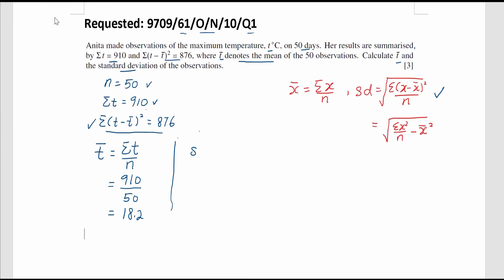So, to find the standard deviations according to this question, it has to be summations T minus t bar bracket square divided by n. And we have this info, 876 and the n is 50. So, means we are taking 876 divided by 50 and we square root it.